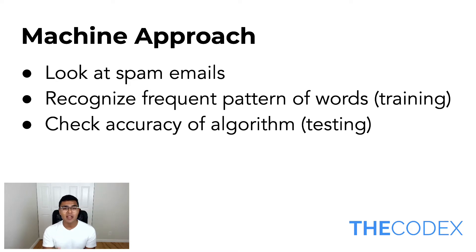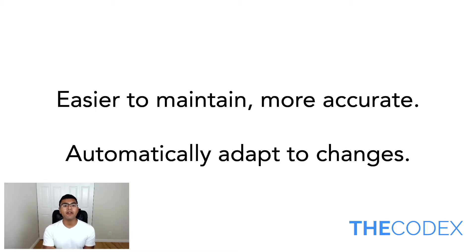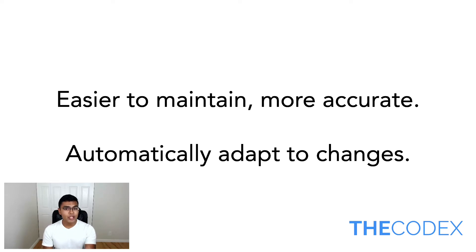My spam filter is 87% accurate. That means if I run this algorithm on 100 new spam emails, 87 of them will be marked spam, which I think is pretty good. That is the machine approach, and you can evidently see this is very easy to maintain, more accurate, and you can automatically adapt to changes. You can create a machine learning algorithm that understands on the fly what is spam and what is not, or you can retrain your algorithm by adding the new spam emails into your training set.